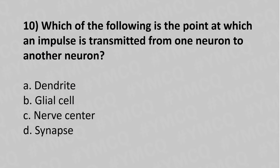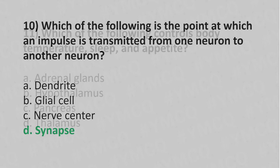Now let's move to question number ten: Which of the following is the point at which an impulse is transmitted from one neuron to another neuron? Option A: dendrite. Option B: glial cells. Option C: nerve center. Option D: synapse. The answer is Option D: synapse.